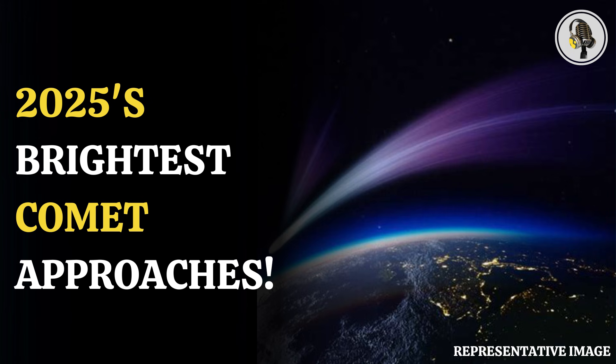The comet will get too close to the sun, making experts wonder whether it will survive the trip. Experts are hopeful since its orbital path suggests that the last time it visited the inner solar system was about 160,000 years ago. This means that it likely escaped unscathed at the time.